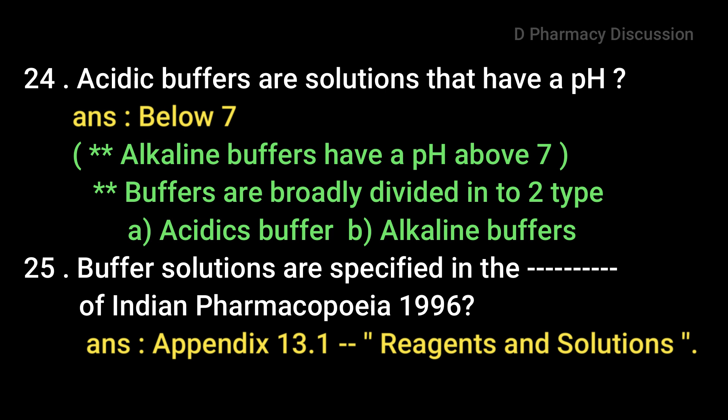Acidic buffers are solutions that have a pH below 7, and alkaline buffers have a pH above 7. Buffer solutions are specified in Appendix 13.1, that is under the reagents and solutions of the Indian Pharmacopoeia 1996.